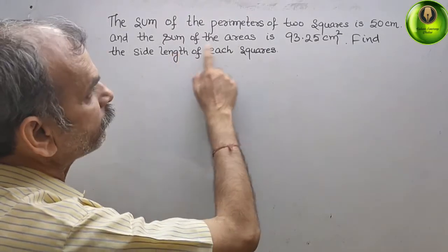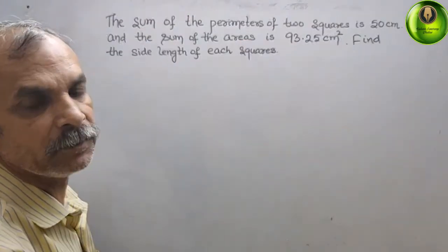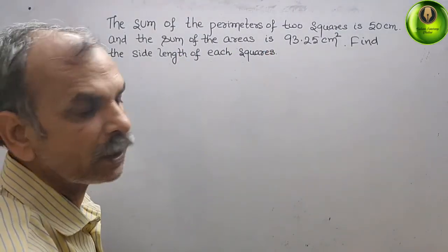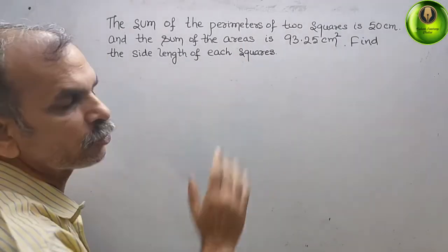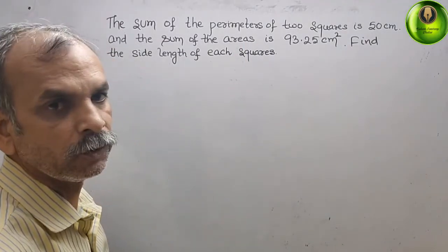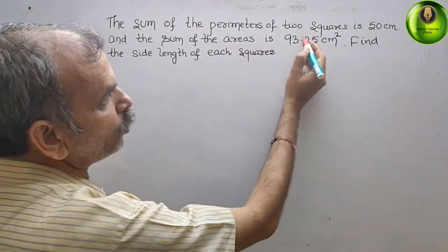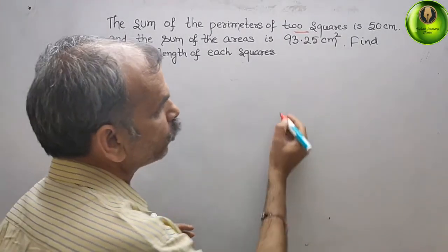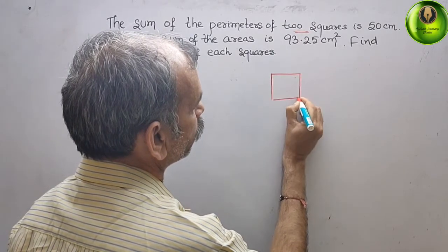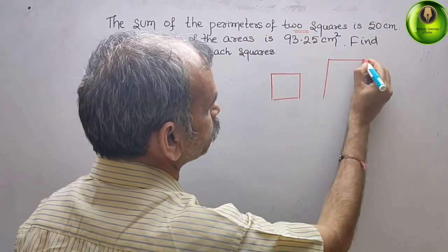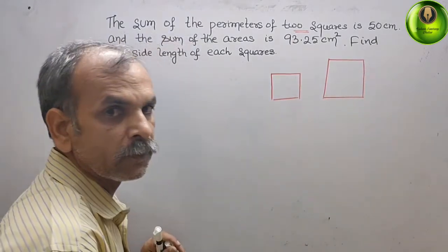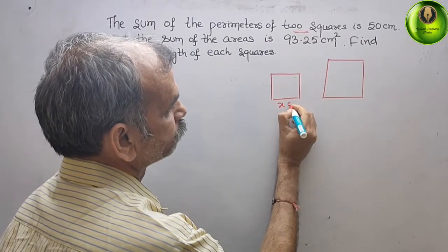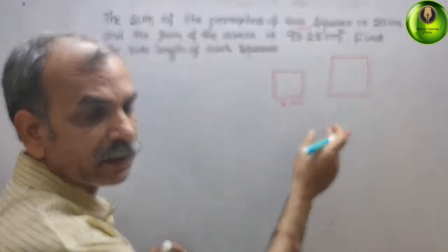Your question is: the sum of perimeters of 2 squares is 50 cm and the sum of the areas is 93.25 cm², find the side length of each square. They have told the two squares case, so we will make two squares. Suppose this is your first square and this is your second square. The side of this square is x cm and the side of this square is y cm.